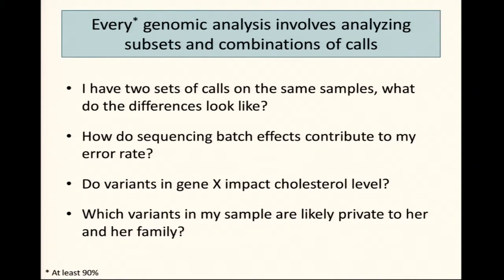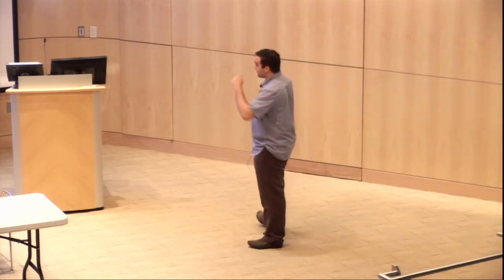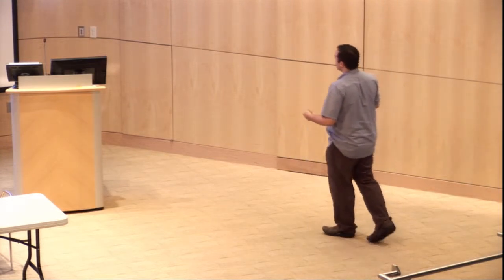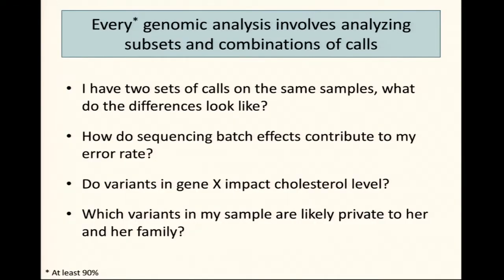The kinds of things you might want to do with a call set are: of my two call sets, say 1,000 Genomes and my new call set, how many things did I discover that were already discovered in 1,000 Genomes? Or I have some sample that I sequenced as a control — are its genotypes lining up, or has something gone wrong? Do I find differences between batches, or do I care about a particular gene and just want to see all the variants in that gene?